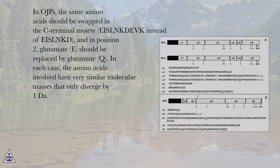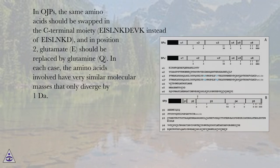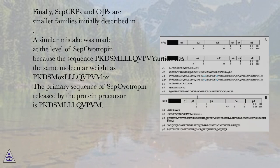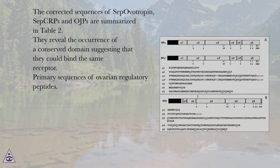In OJPs, the same amino acid swap should occur in the C-terminal moiety, and in position 2, glutamate (E) should be replaced by glutamine (Q). In each case, the amino acids involved have very similar molecular masses that only diverge by one Dalton. Finally, sep-CRPs and OJPs are smaller families than initially described. A similar mistake was made at the level of sep-ovotropin, because the sequence p-dysiml-L-L-QVY-amide has the same molecular weight as p-mox-L-Q-mox. The primary sequence of sep-ovotropin released by the protein precursor is p-k-dysiml-L-L-QV-PVM. The corrected sequences of sep-ovotropin, sep-CRPs, and OJPs are summarized in Table 2.